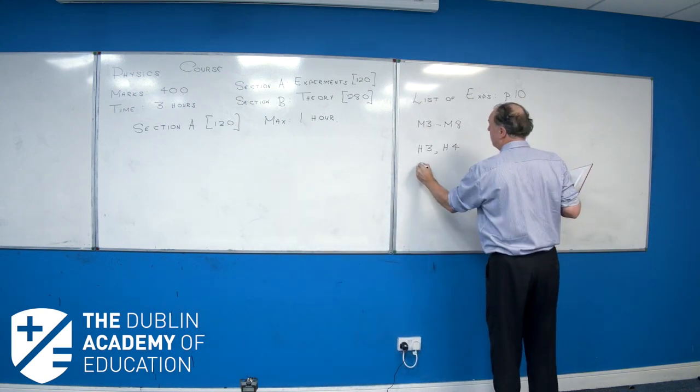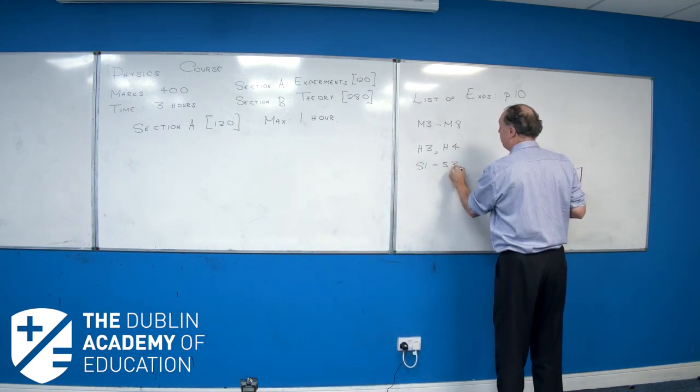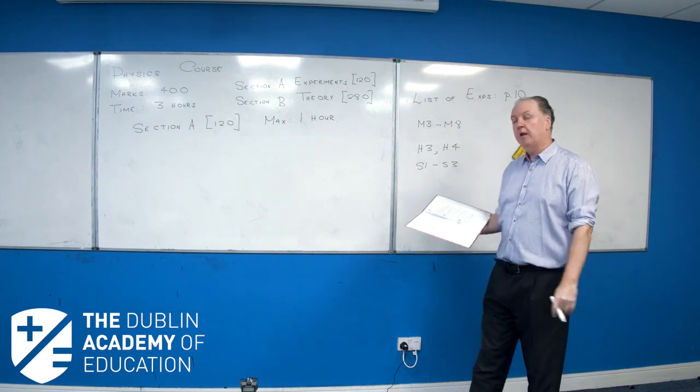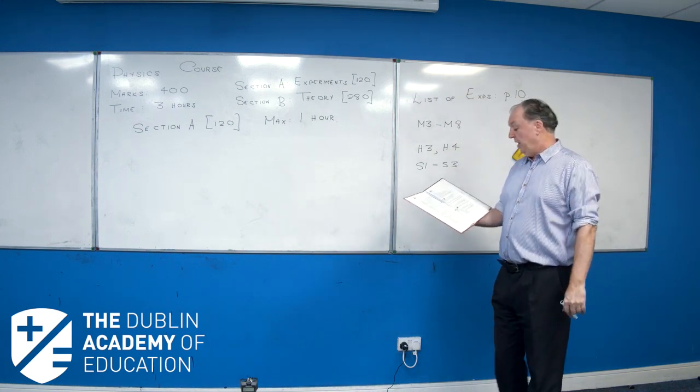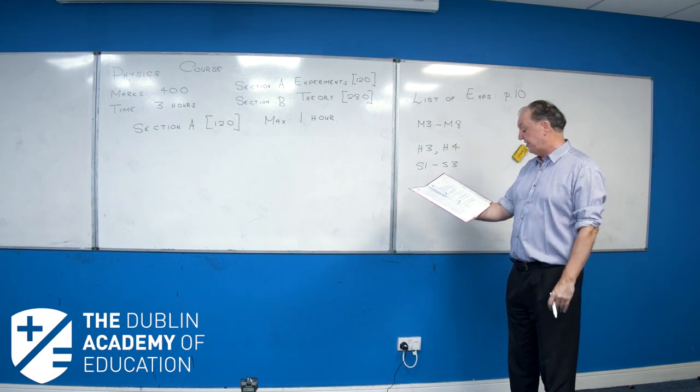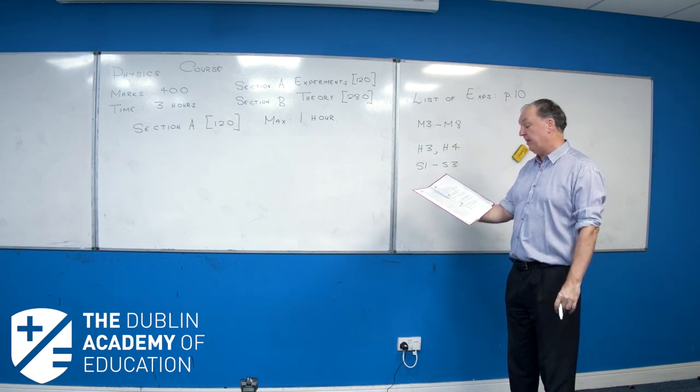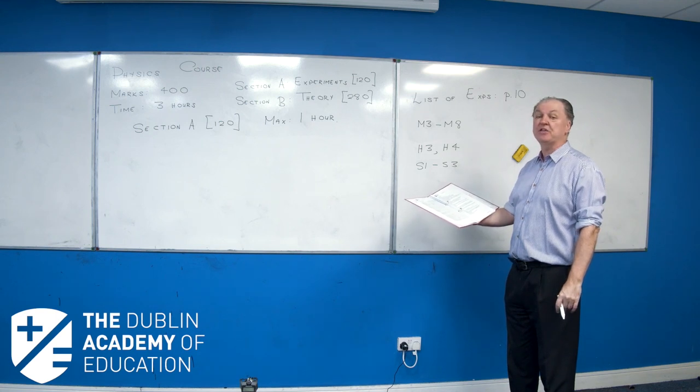Sound. Three experiments. They'll ask them all. Light. Well, you've got five experiments on light, on page 10. And that middle one, L3, they usually only ask on the ordinary level.